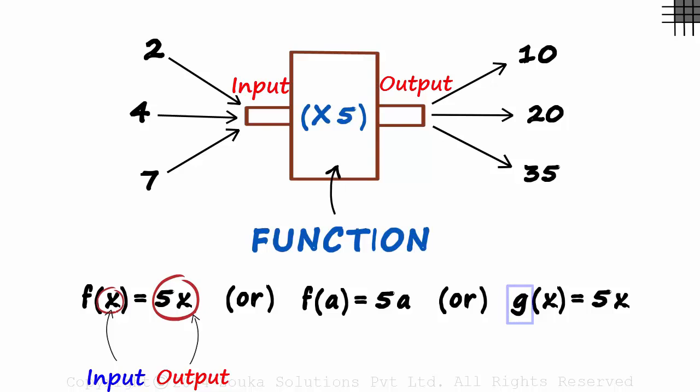G is a function which multiplies 5 to the input and gives us an output. So don't get confused if you see some other letter as the function name.